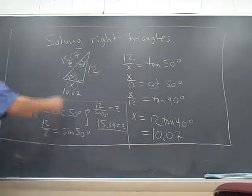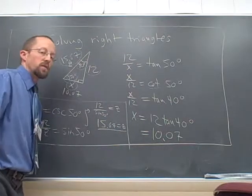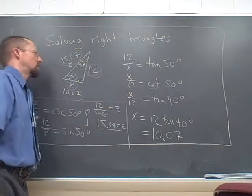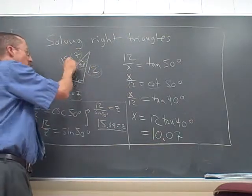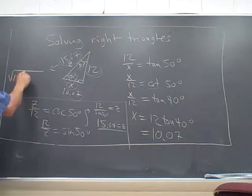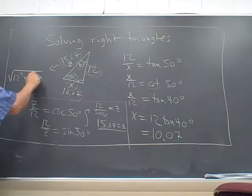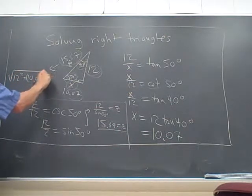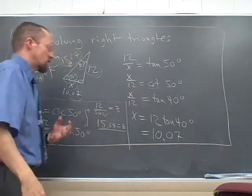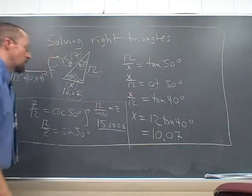Now there's another way to get that third side. If you know this side of the right triangle, then you know this side. Pythagoras would also get that to us. We could have gotten that as the square root of 12 squared plus 10.07 squared. Don't forget Pythagoras - it's still the most basic and fundamental fact about right triangles.